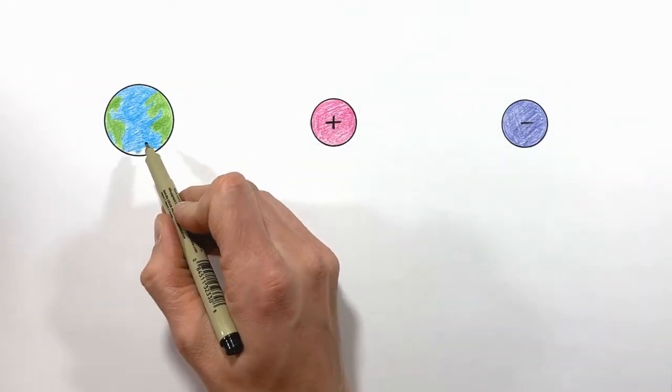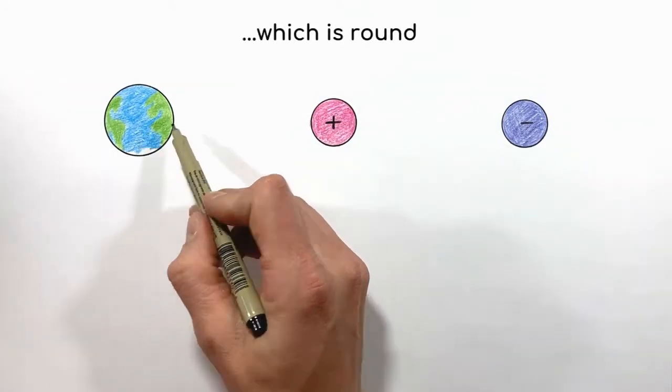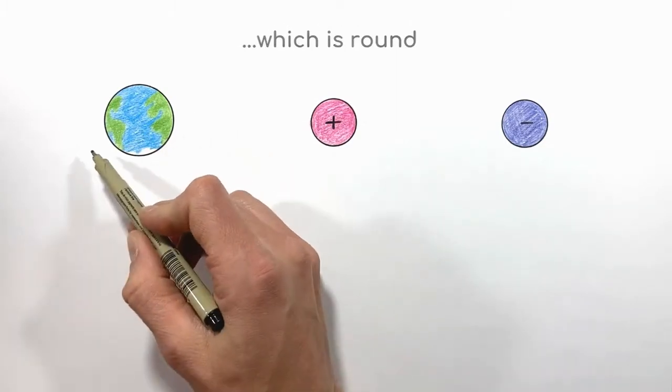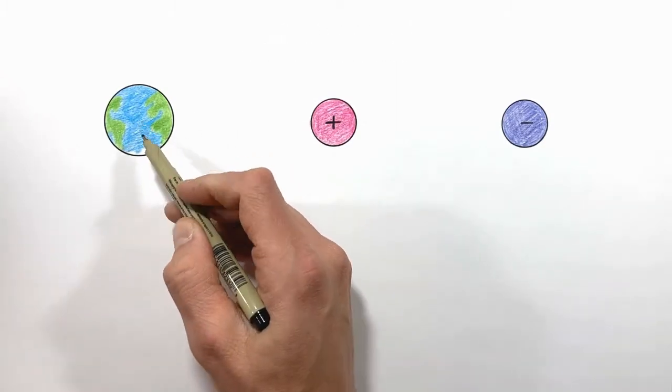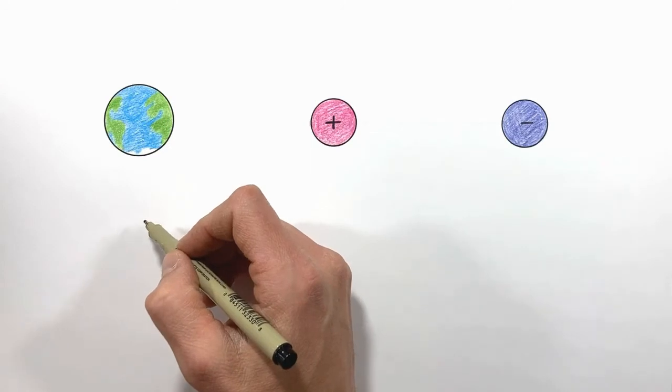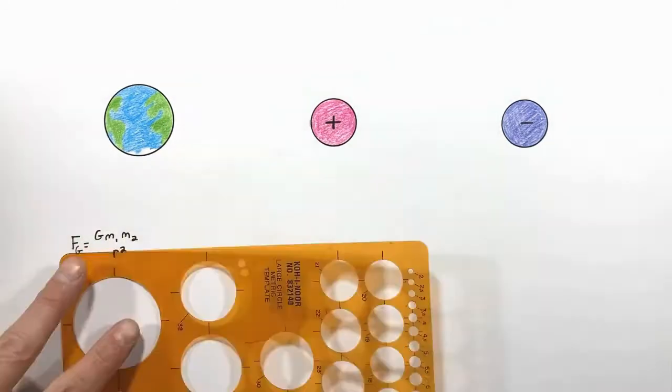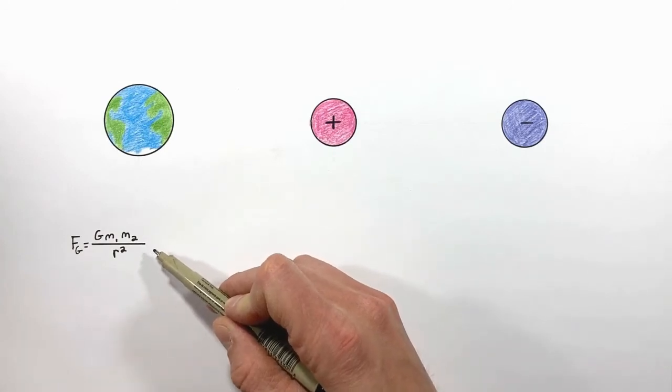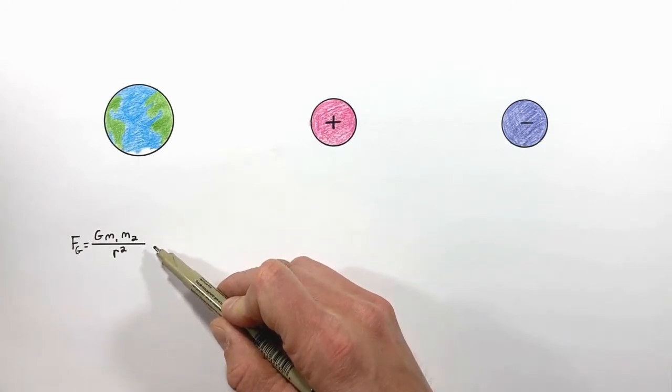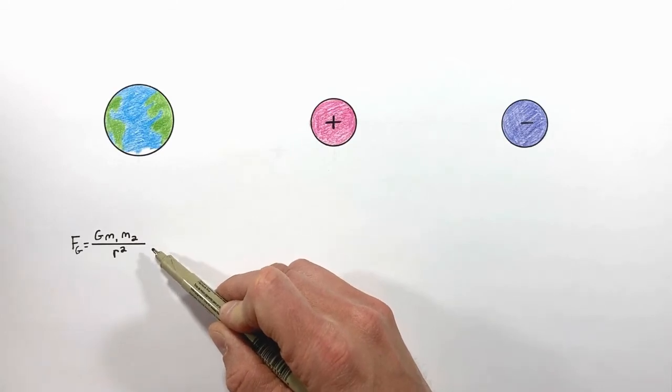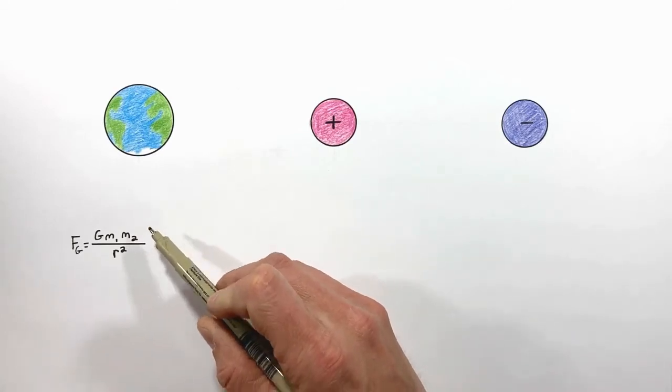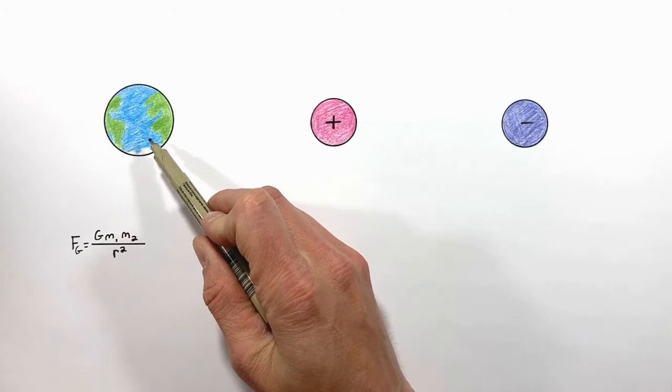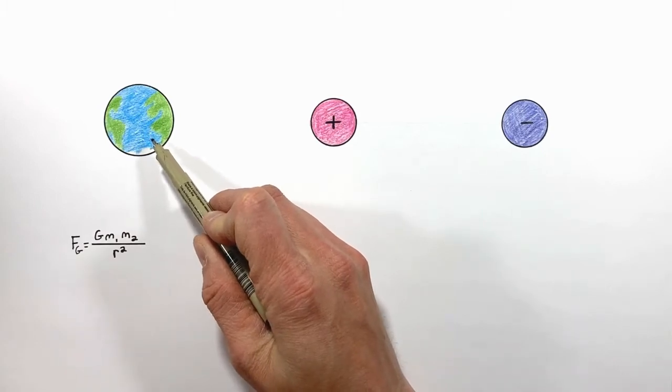If we take a look at something like the Earth, the force by gravity pulls any mass that we place near the Earth towards the Earth according to Newton's law of universal gravitation. While you've probably seen and used this equation quite a bit, the idea of a gravitational field isn't something that comes up all too often. That's because in physics we typically refer to the gravitational field around the Earth as something else: the acceleration due to gravity.